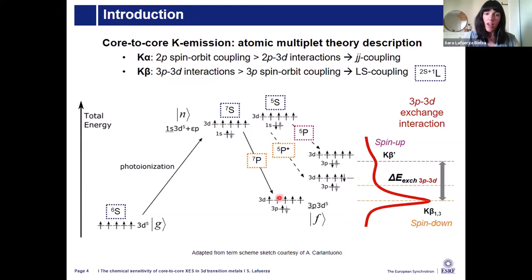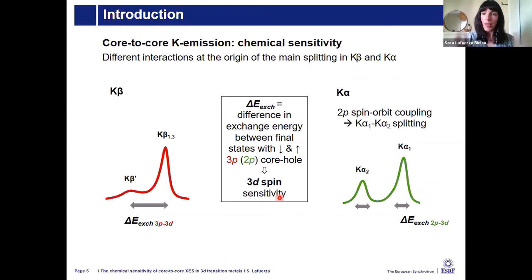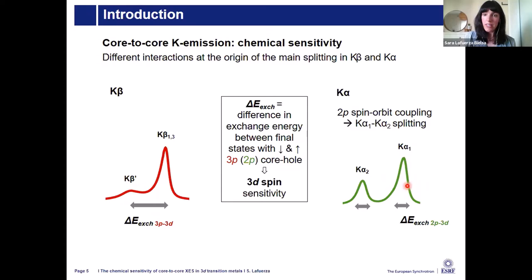There are many multiplets, even more for a 3D6 configuration. To make the link to K-alpha: the K-beta main splitting is given by the exchange interaction, which relates to the spin. In K-alpha, the main splitting is given by the 2P spin-orbit coupling, yielding K-alpha 1 from 2P1/2 to 1S and K-alpha 2 from 2P3/2 to 1S. Still, the exchange interaction between the 2P core hole and the 3D electrons gives rise to changes in symmetry and width of the lines, so there is still some sensitivity in these lines.